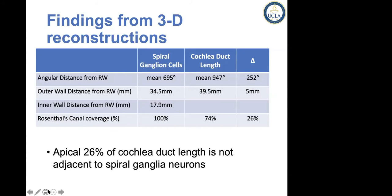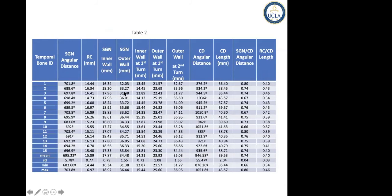When you look at the variance along the inner wall of the cochlea and compare that to the variance along the outer wall, the standard deviation around the linear lengths along the inner wall is much smaller than the outer wall. This means the lengths you have using the perimodiolar route will give you much more consistent coverage compared to having a lateral wall electrode.